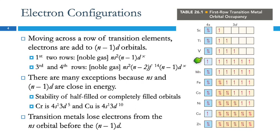Here this sublevel is half full and this sublevel is half full, and that's lower in energy. So that makes up for this electron moving up to a slightly higher energy orbital.